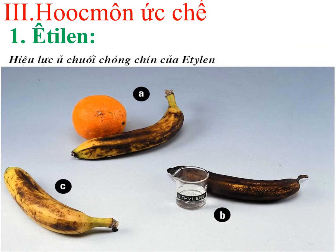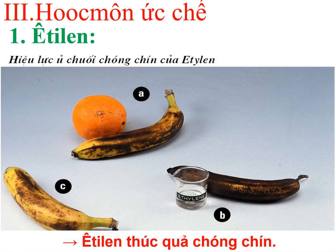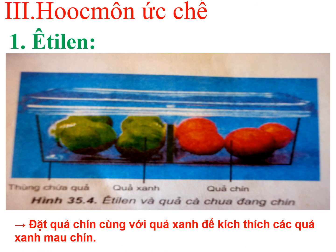Quan sát hình ảnh để rút ra vai trò của ethylene. Người ta sử dụng 3 quả chuối có mức độ đồng đều như nhau, ký hiệu A, B và C. Riêng quả chuối ở hình B có xử lý bởi ethylene. Sau khoảng thời gian như nhau thì quả chuối ở hình B chín nhanh hơn so với hình A và hình C. Điều đó chứng tỏ khi có mặt của ethylene thì ethylene thúc quả chín. Người ta xếp các quả cà chua còn xanh và các quả cà chua đã chín vào trong một cái thùng - những quả chín sẽ sản sinh ra khí ethylene và ethylene này sẽ kích thích các quả xanh chín hơn.